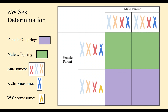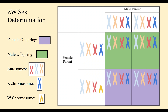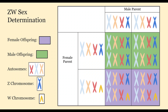Similarly, we have ZW sex determination, which also has two sex chromosomes, except in this case they are the Z chromosome and the W chromosome. It is the female in this case that is heterozygous with Z and W, where males have two Z chromosomes. So like in XY, it is the heterozygote that determines the sex of the offspring — in this case the female parent.